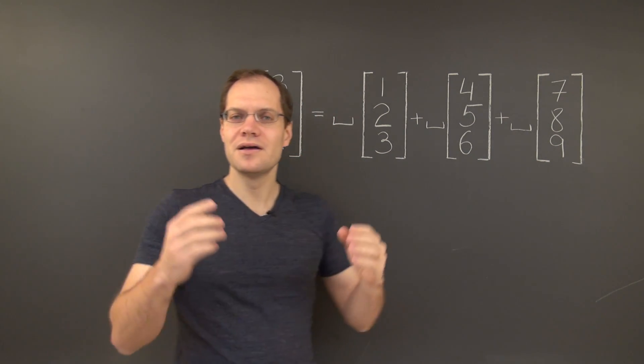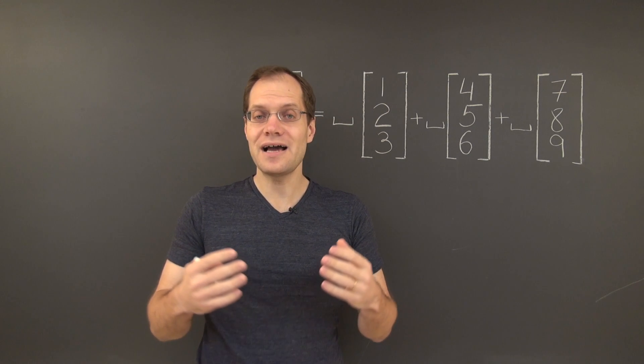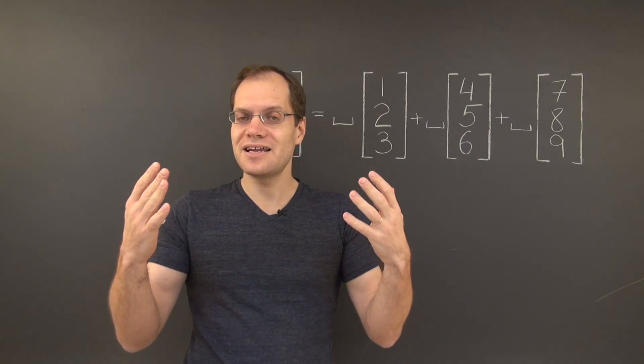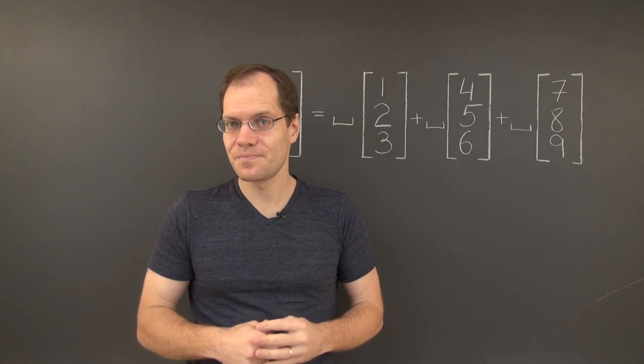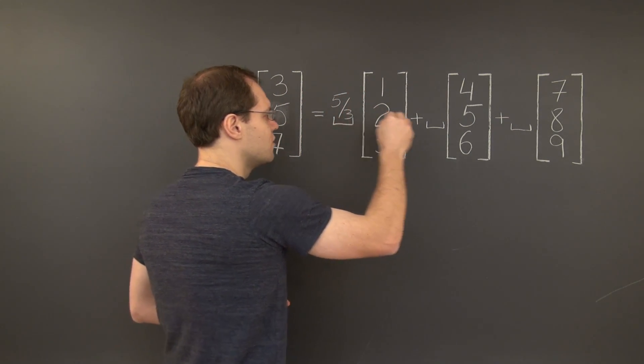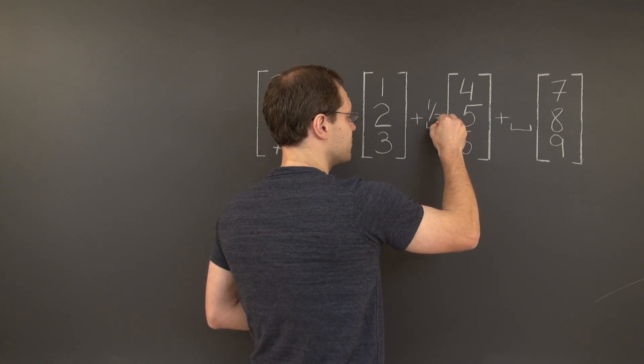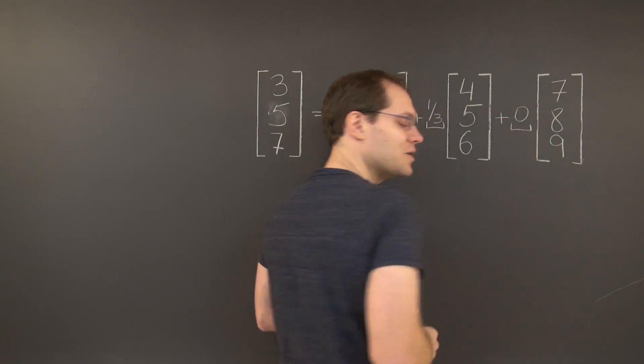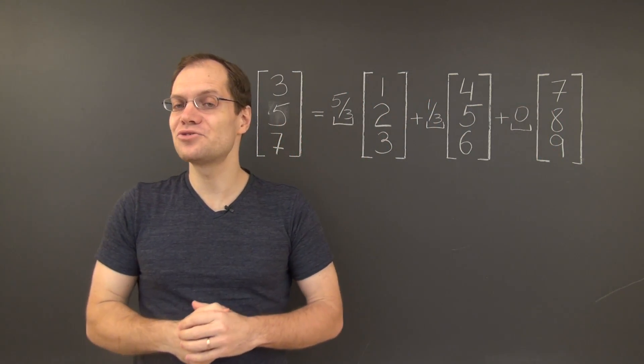But this problem does have a solution. In fact, as we'll discover in the future, it has infinitely many solutions. And one of those solutions is 5 thirds, 1 third, 0. Go ahead and make sure that this is the right solution.